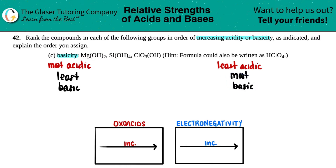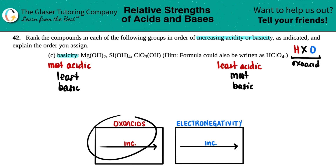Once we have that figured out, we can rank these in terms of acidity and still get the same answer. Thinking in terms of acidity, we have a hydrogen, a random element, and oxygen. If we have hydrogens in the front, oxygens in the back, and some random element in the middle, this is going to be an oxo acid. All three of these have that kind of formula, so we can use the oxo acid trend.